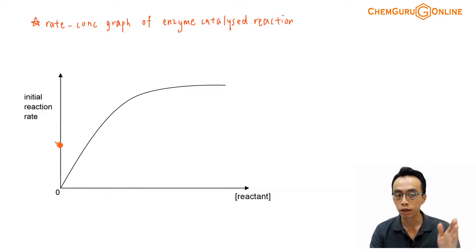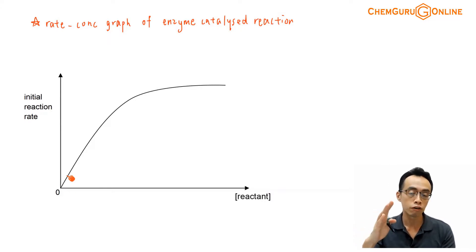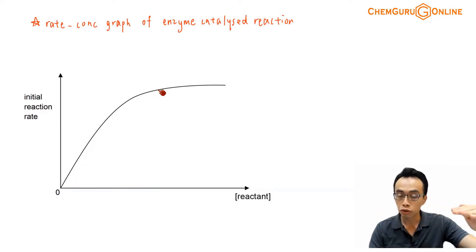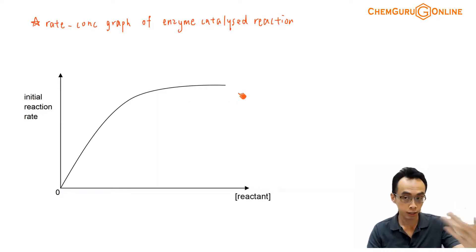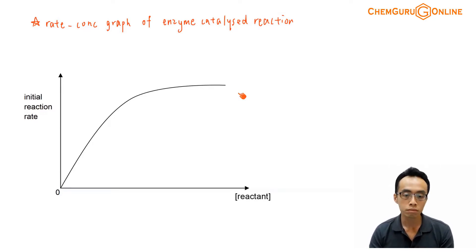My y-axis will be the initial rate of the reaction, and the x-axis will be the concentration of the reactant. You notice this graph is pretty interesting. At the beginning, the rate of the reaction increases when the concentration of the reactant increases, and eventually it starts to taper off. When the concentration of the reactant becomes higher and higher, the rate of the reaction starts to stabilize and it doesn't change anymore. So what we want to do in this video is we want to explain why the rate of the reaction changes in this way with respect to the concentration of the reactant.